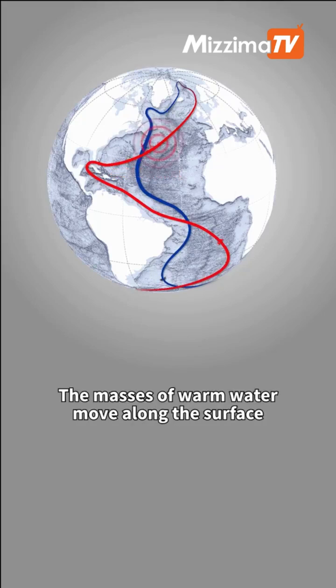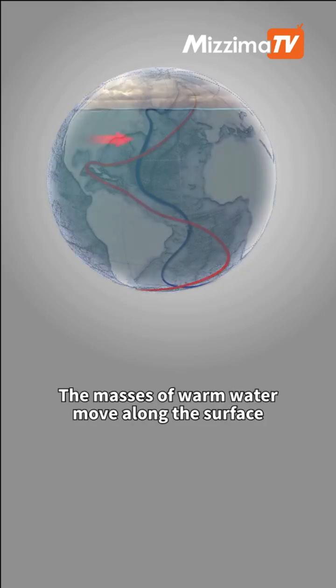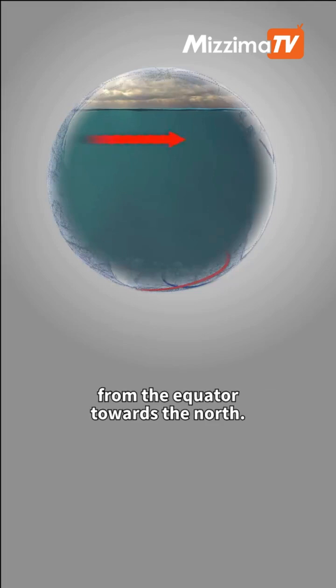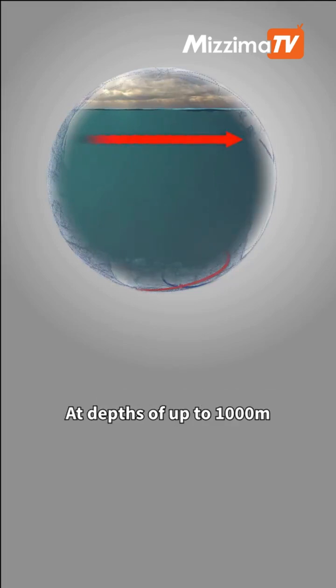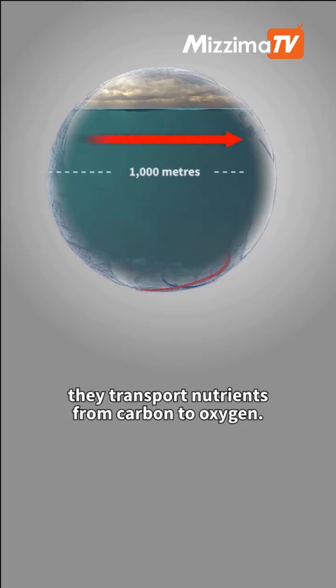The masses of warm water move along the surface from the equator towards the north. At depths of up to a thousand meters, they transport nutrients from carbon to oxygen.